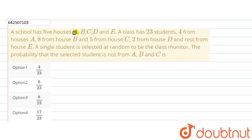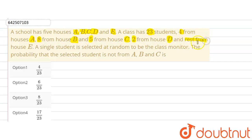The given question says that a school has five houses: A, B, C, D, and E. A class has 23 students. Four students are from house A, eight students are from house B, five students are from house C, two from house D, and the remaining one is from house E. A single student is selected at random to be the class monitor.